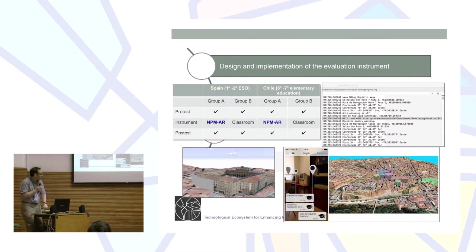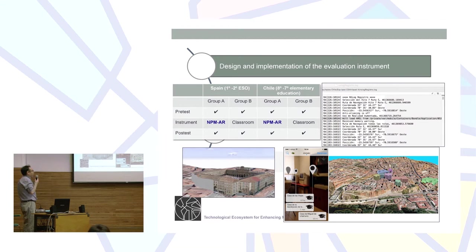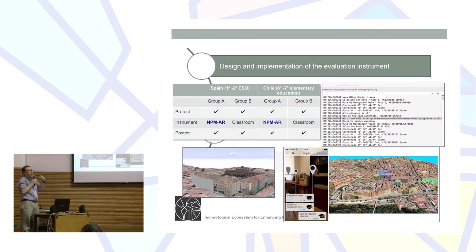In the third stage, we implemented the evaluation instrument. We needed to understand how students use the application, how they learn with augmented reality, virtual maps, and the mobile context. We developed a test with 25 items and divided participants into two groups — Group A and Group B — applying a pre-test with those 25 items to both groups before the intervention.